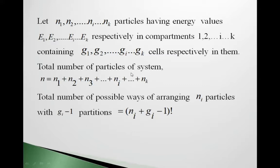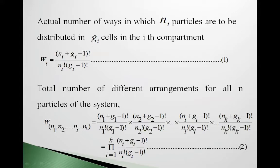Total number of particles: N = N₁ + N₂ + N₃ + ... + Nᵢ + ... + Nₖ. The total number of possible ways of arranging Nᵢ particles with (j−1) partitions is equal to (Nᵢ + j − 1)! — since if there are j cells, there are j−1 partitions. So the actual number of ways to distribute Nᵢ particles in Gᵢ cells in the i-th compartment is: Wᵢ = (Nᵢ + Gᵢ − 1)! / [Nᵢ! · (Gᵢ − 1)!]. This is equation 1.